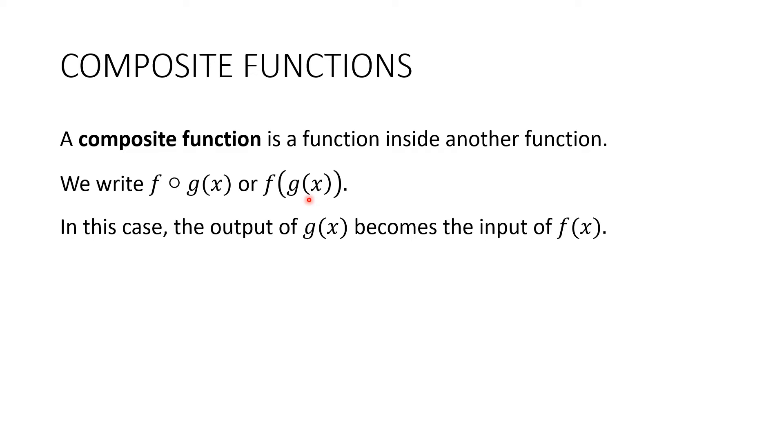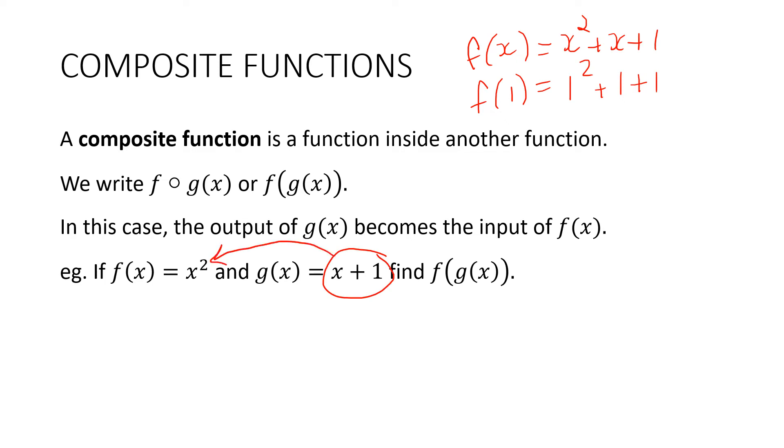Now, in this case, the output of g(x) becomes the input of f(x). Now, if that confuses you a little bit, just let that go for the moment. You'll understand that in a minute. Here's an example. If f(x) = x² and g(x) = x + 1, find f(g(x)). Now, before we do that question, let's just remind ourselves what this means. Suppose we have f(x) = x² + x + 1. And I ask you to find f(1). We're going to substitute the 1 everywhere we see an x, like this. Okay, now it's exactly the same here. We're going to take our g(x) and substitute it everywhere we see an x. So f(g(x)) is just going to be equal to (x + 1)². Hopefully that makes sense to you.